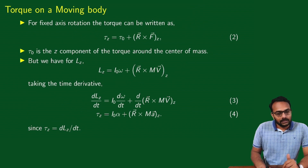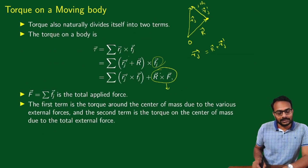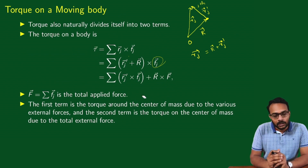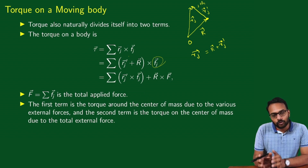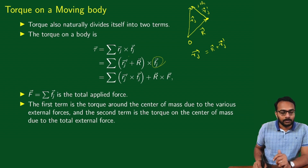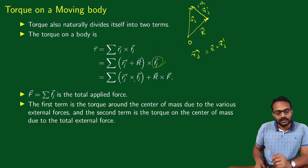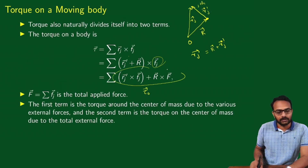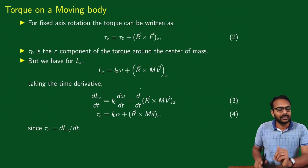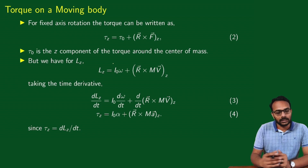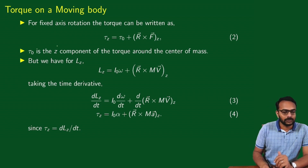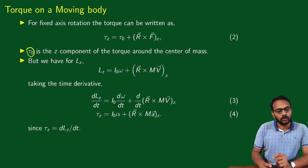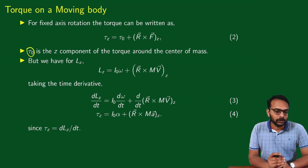In fixed axis rotation, we are interested in the z-component of torque — the component along the axis of rotation. The total torque tau-z is tau-0 plus the z-component of R cross F. Tau-0 is the z-component of the torque around the center of mass. This is the quantity of interest: the z-component of torque around the center of mass.